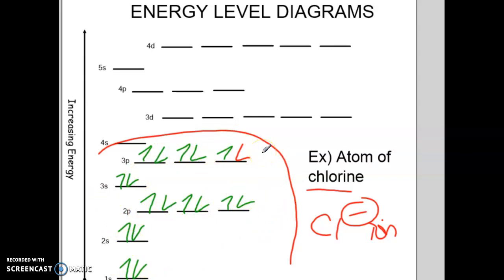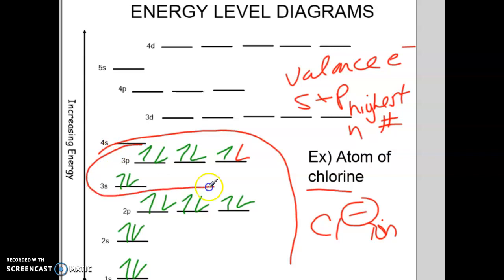All of our orbitals are completely filled. Now, if you remember anything about ions, really we talk about the valence electrons when we're looking at ions. So valence electrons are the s and p electrons in the highest n number. Okay, so for example, here I have energy level number one, energy level number two, energy level number three.